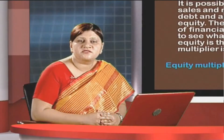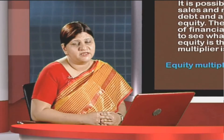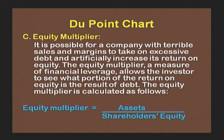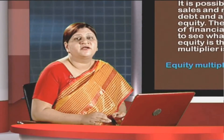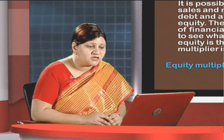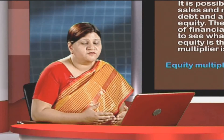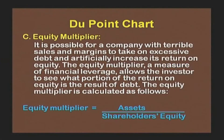The last and most important component of the DuPont chart is the equity multiplier. It is possible for a company with terrible sales and margins to take on excessive debt and artificially increase its return on equity. The equity multiplier, a measure of financial leverage, allows the investor to see what proportion of the return on equity is the result of debt. It is calculated as: equity multiplier = assets divided by shareholders' equity.